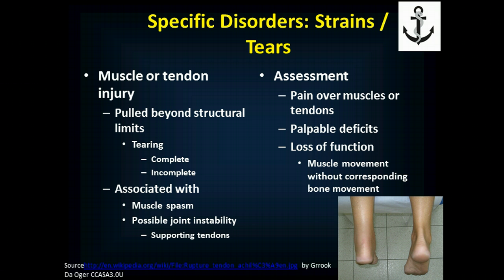Muscles and tendons don't sprain — sprains occur to ligaments that hold joints together. Muscles and tendons strain or tear when pulled beyond their limits, and tears can be complete or incomplete. Muscle spasm results from the injury, and the joint may become unstable depending on which tendon tore, since tendons connecting muscle to bone also provide some structural support around the joint. A completely torn muscle takes away your ability to move.